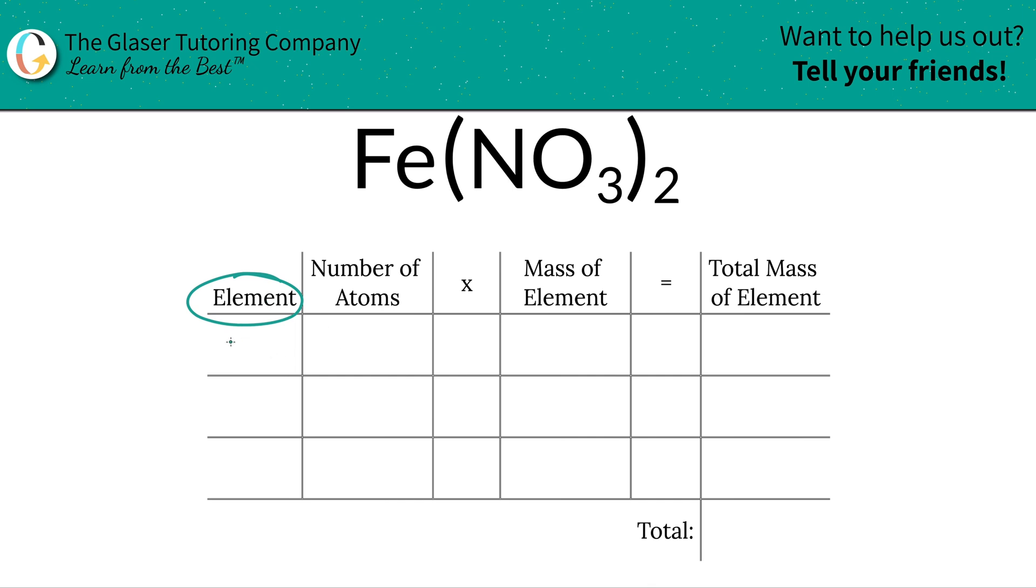So the first thing I'm going to do is write down the elements I see in the compound. So I see iron, Fe. I see nitrogen, N. And I see O, oxygen.